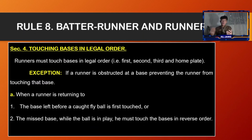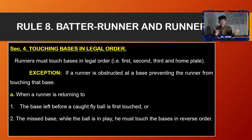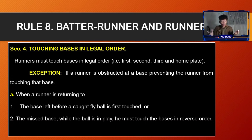Section number four, touching bases in legal order: runners must touch bases in legal order — first, second, third, and home plate. Exception: if a runner is obstructed at a base preventing them from touching that base. When a runner is returning, they must touch the base left before the caught fly ball was first touched, or the missed base while the ball is in play, touching the bases in reverse order.